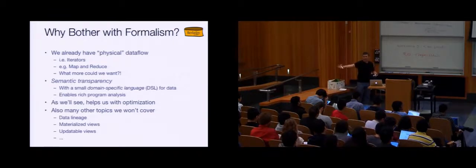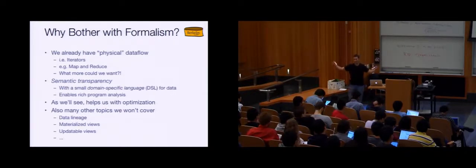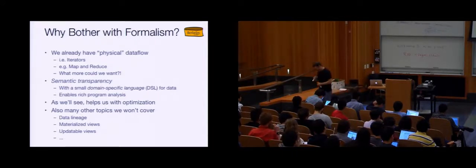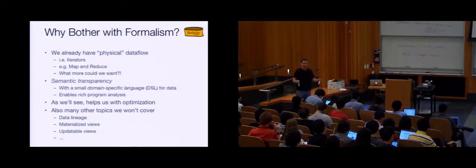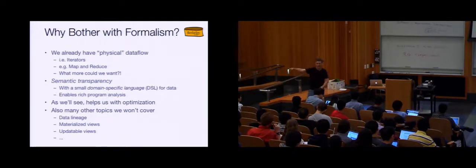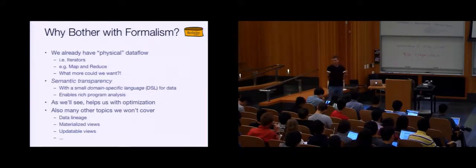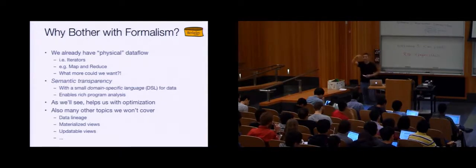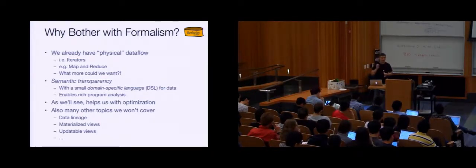Similarly, we can talk about materialized views — a view is just a query, and a materialized view is a query whose output you've saved so that if you ask the same query again, it's already answered. When someone updates the database, the output should change, and you want to change that stored output without rerunning the query from scratch. If we understand the query in detail, we can often find a delta query that makes it a little bit of work to change the output based on the change to the input. There are also updateable views — you have the output of a query, you change the output, and you want the system to figure out how to change the database to reflect that. Having a rich formal language enables a host of goodness.